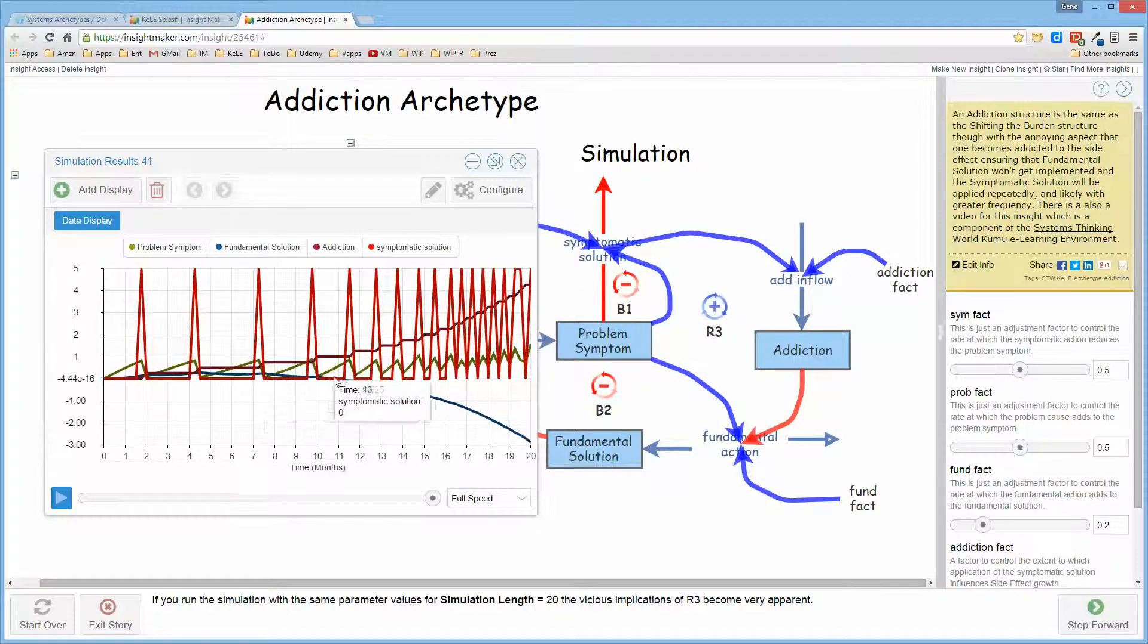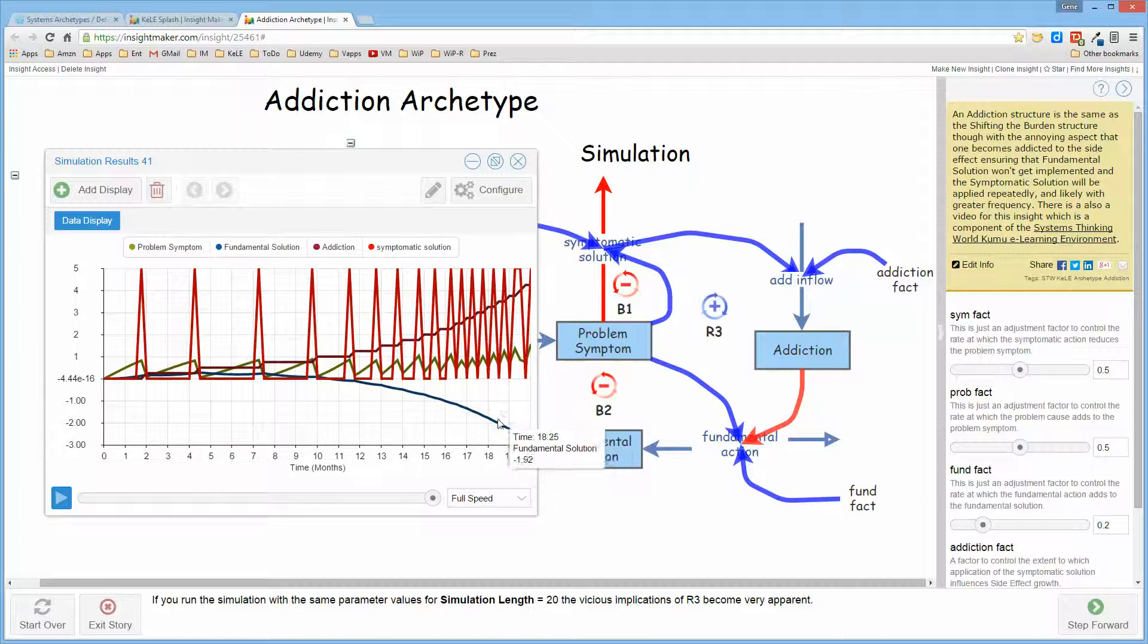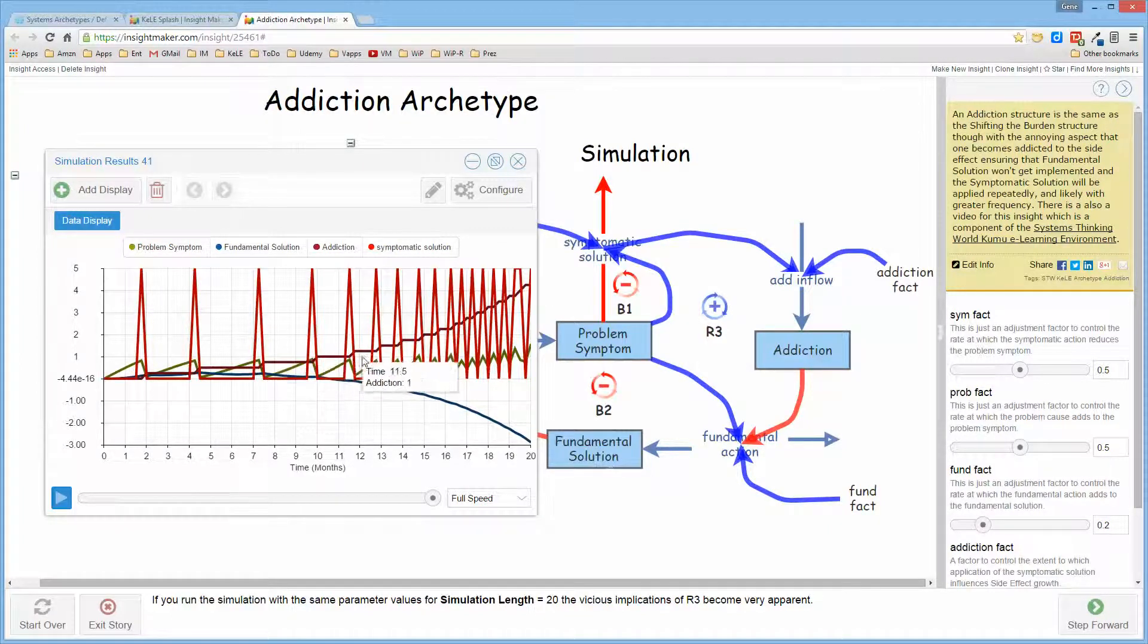This actually causes the fundamental solution to be on a negative exponential decline, and the symptomatic solution ends up getting implemented more and more frequently until it gets to the point where it's a constant application to deal with the situation, so that the addiction is simply causing us to go around in the same circle faster and faster and faster.